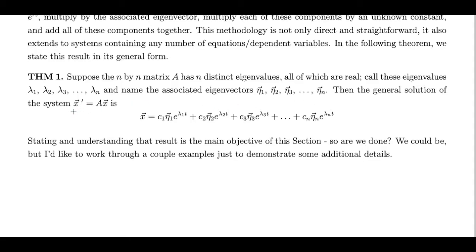Then the system of differential equations x prime equals Ax will have this general solution. Basically, this is saying that we can take our eigenvalues, put them in the exponent of the exponential, multiply by the associated eigenvector, add an unknown constant as a coefficient so that we can incorporate initial conditions if they're provided, and then do that as many times as needed. This will only work if all of my eigenvalues are distinct — none are repeated — and if all of my eigenvalues are real. In the next two sections, we'll look at repeated eigenvalues and then complex eigenvalues. But if I have all distinct real eigenvalues, I can build my general solution in a pretty direct way.